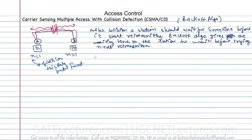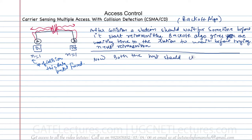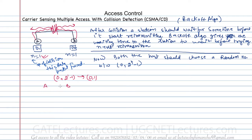After getting the first collision, both hosts should choose a random number between 0 to 2 raised to the power n minus 1, where n is the number of collisions. Here the value of n is 1, so both hosts should choose a number between 0 to 2^(1) minus 1, which is 0 to 1. So A can choose 0 or 1, and B can choose 0 or 1, giving four possibilities.